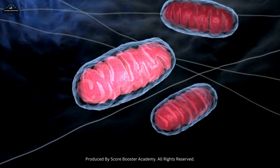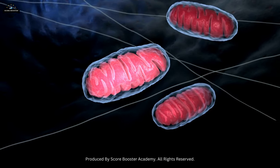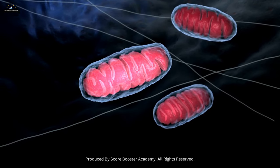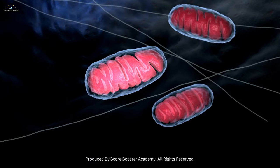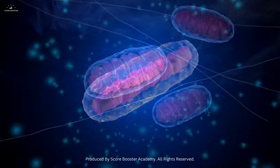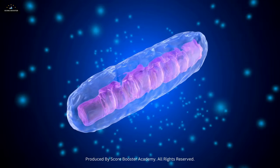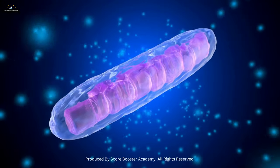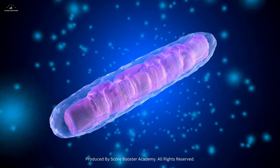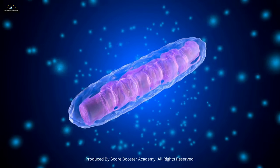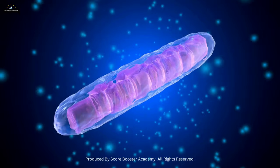Mitochondria are capable of adapting to changes in environmental conditions, such as fluctuations in nutrient availability or oxygen levels. They can adjust their metabolic processes and energy production strategies to optimize cell survival under different conditions.